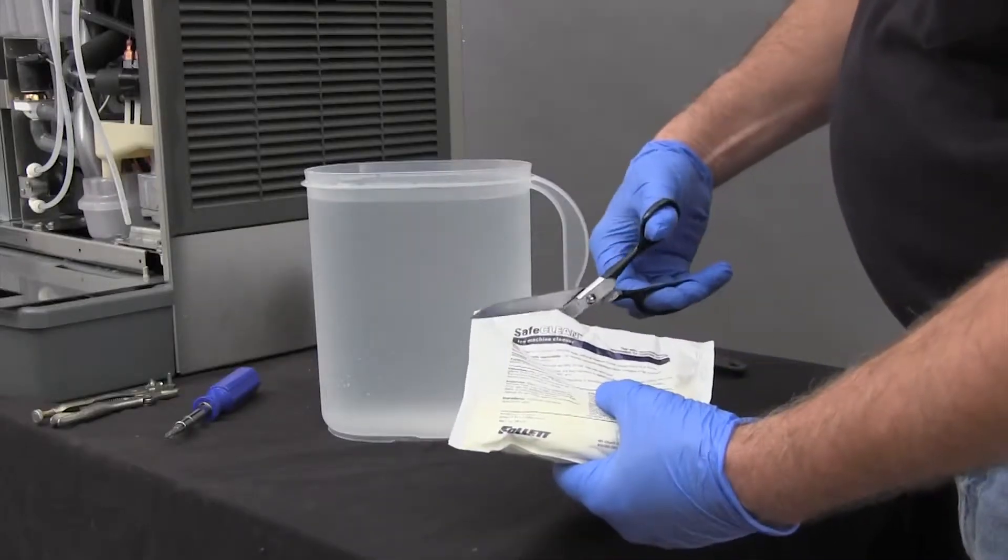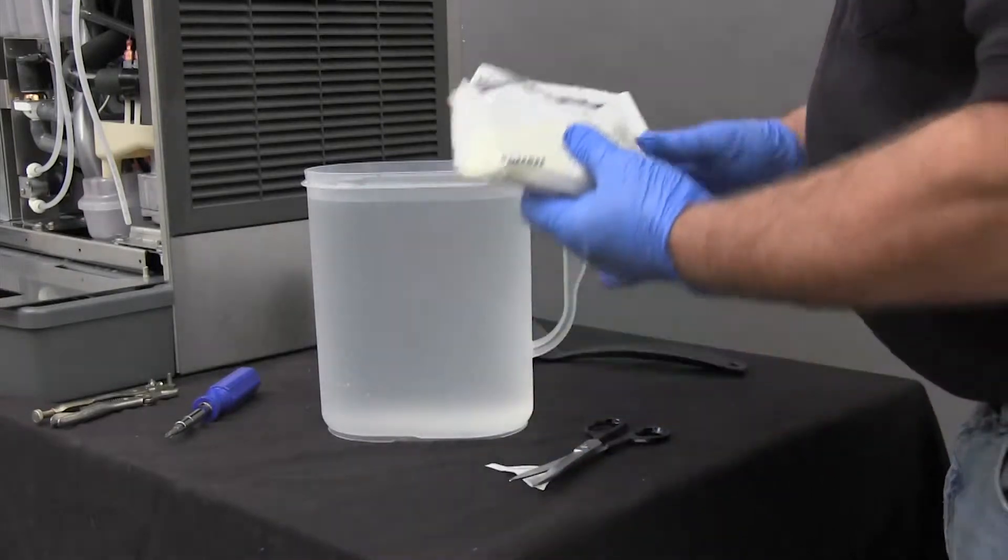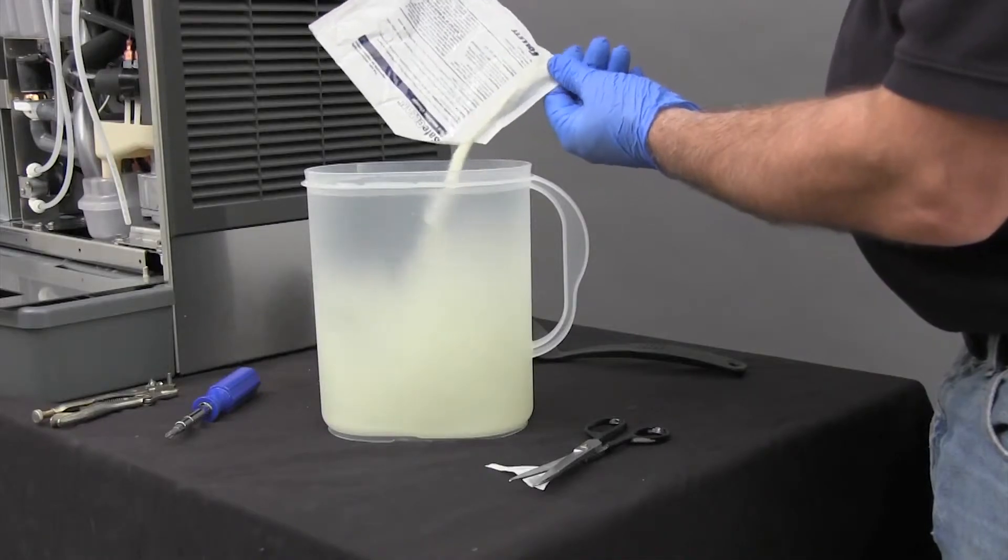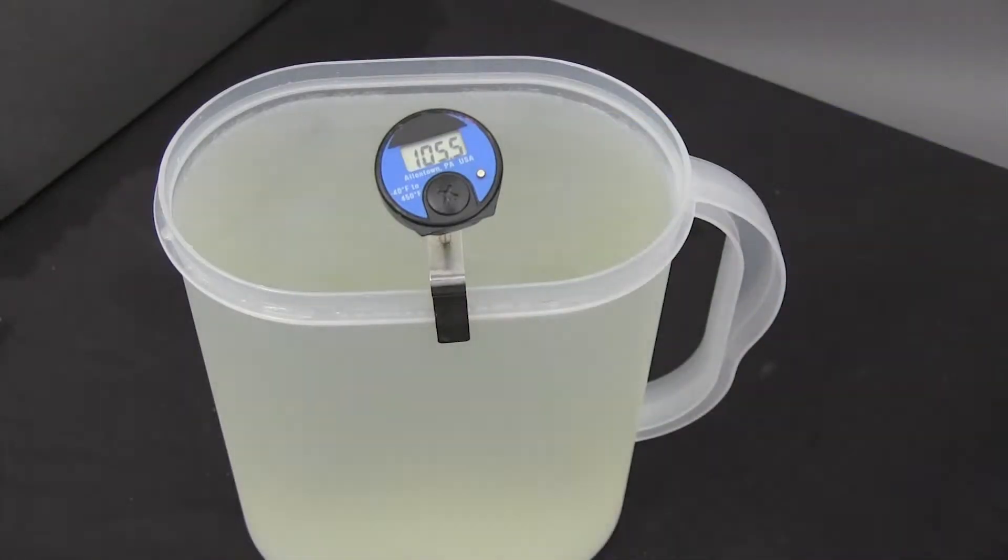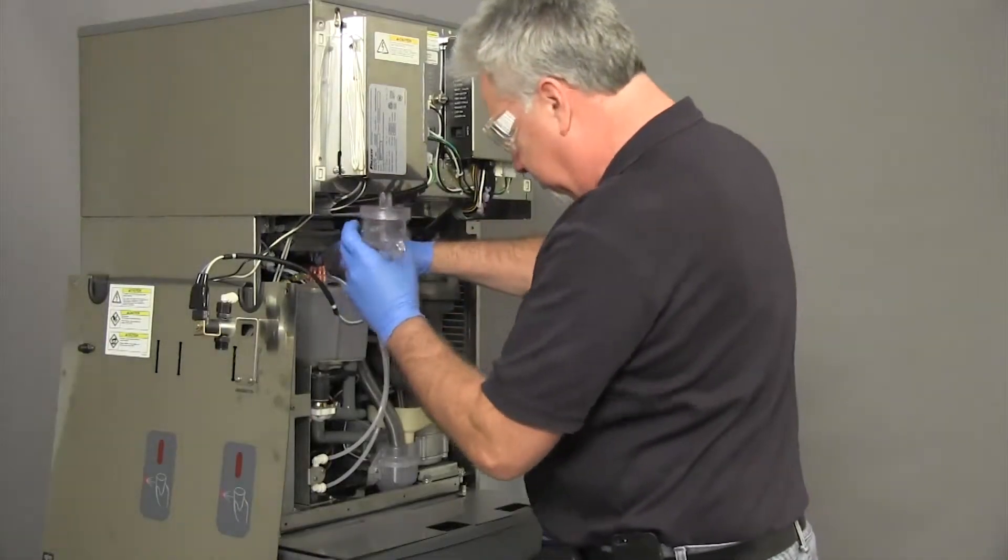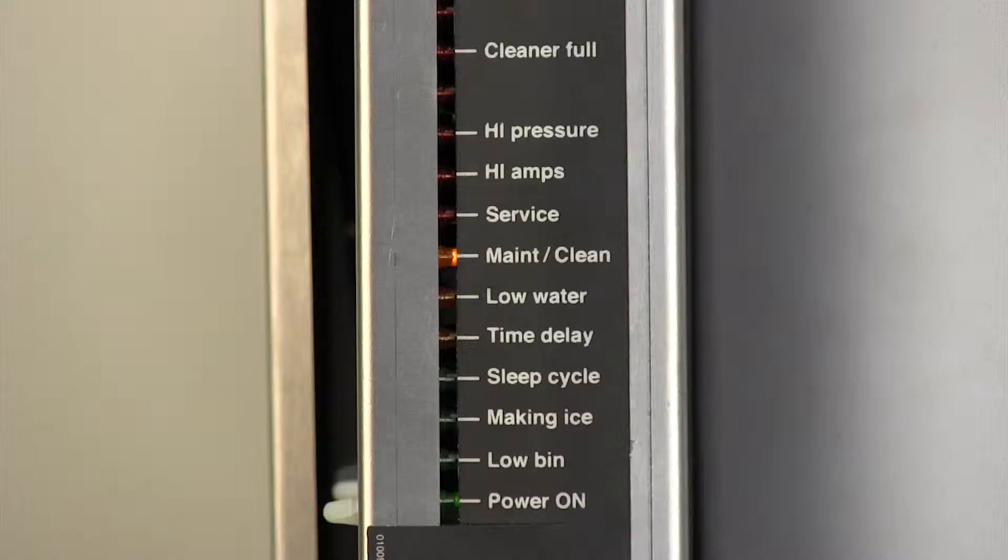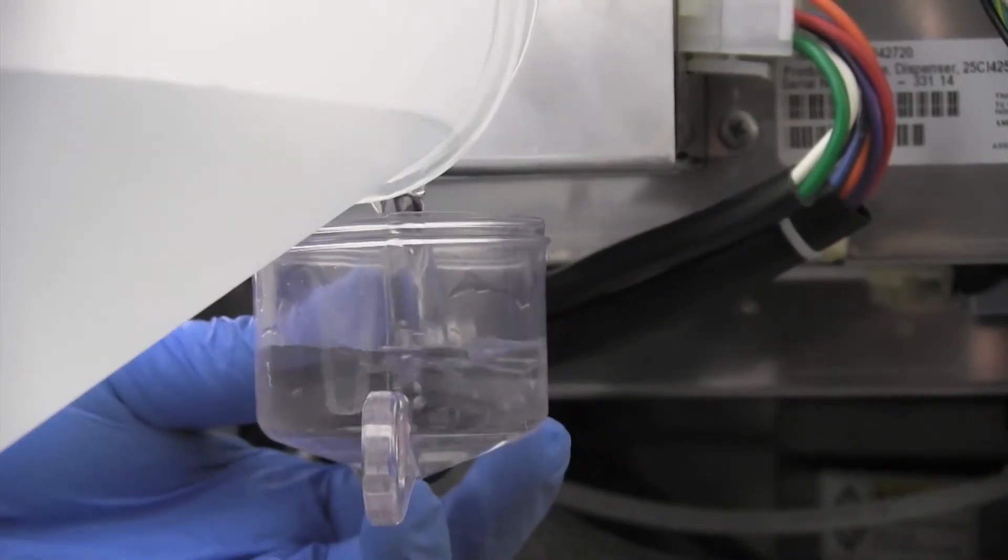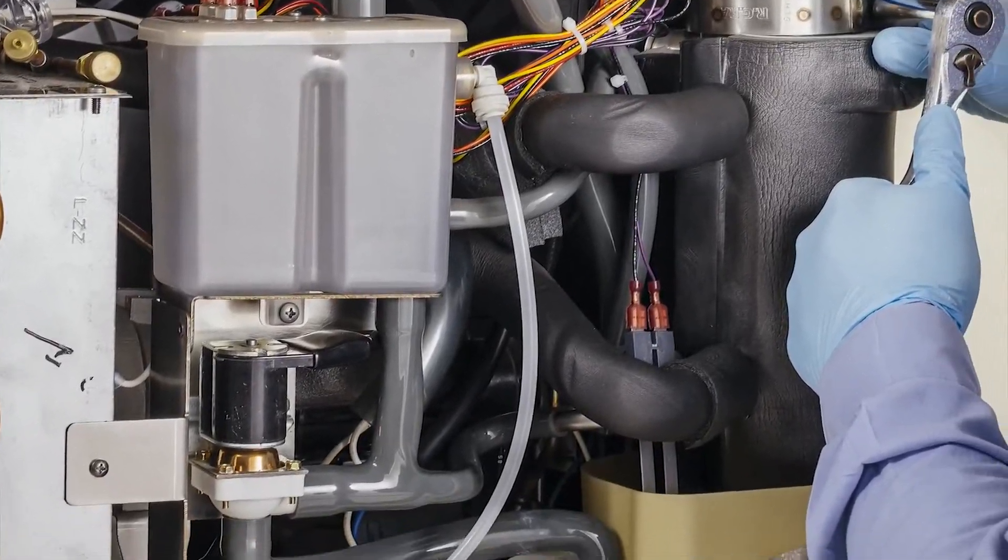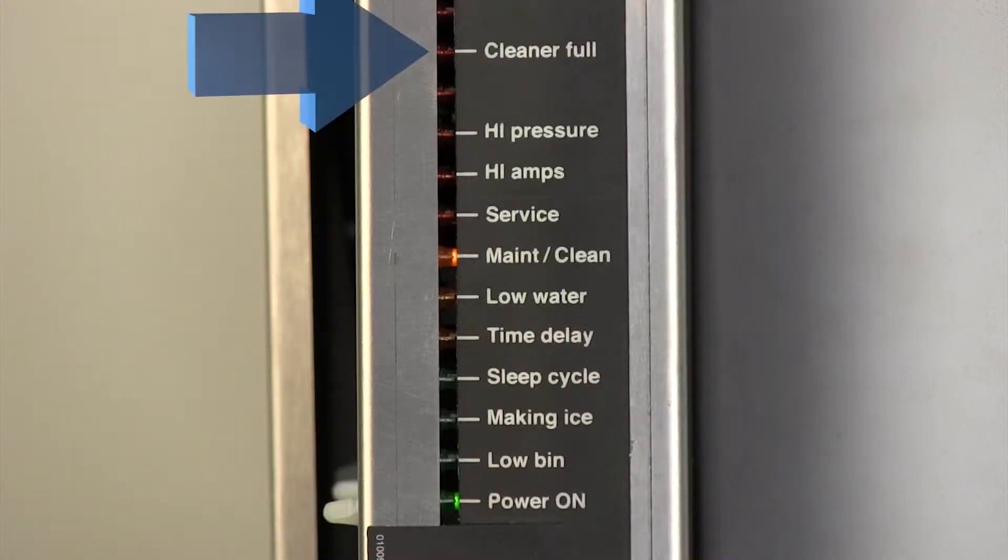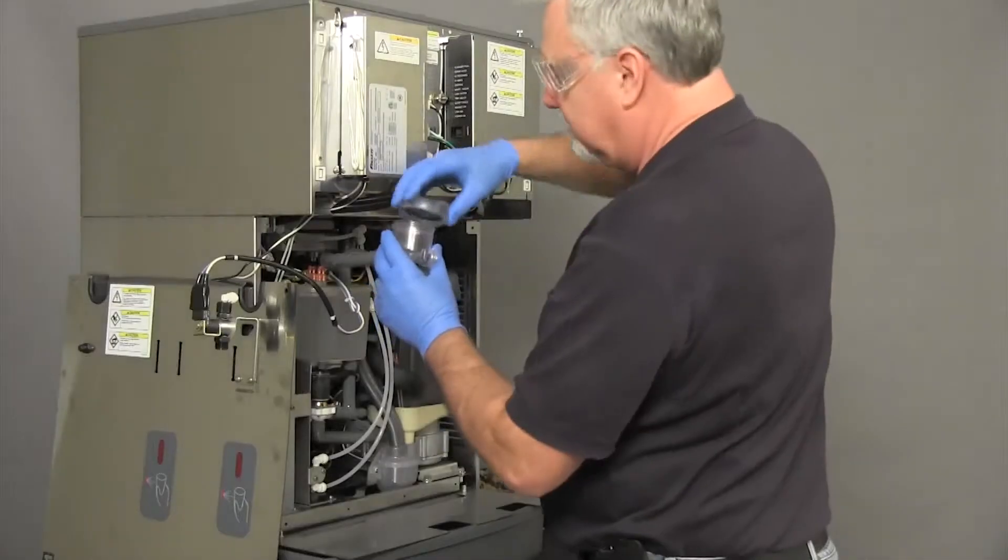Following the manufacturer's instructions, mix one 7-ounce packet of Follett SafeClean Ice Machine Cleaner and Descaler with one gallon of water that is at least 100 degrees Fahrenheit. Locate the cleaning cup and remove the lid. When the low-water light comes on, elevate the cleaning cup above the water reservoir. Slowly add solution to the cup until the solution is going through the overflow tube to the evaporator drain pan. Verify that the cleaner full light turns on. Replace the cup lid.